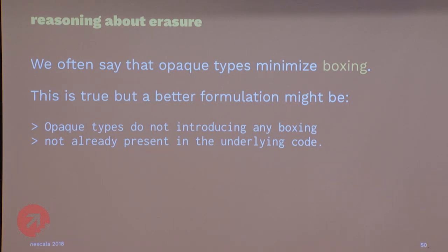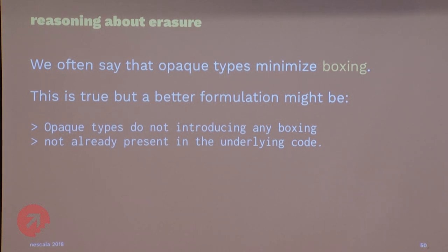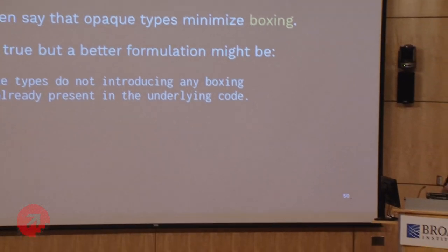One caveat: opaque types minimize boxing in the sense that they don't introduce any boxing that wasn't already present in your code. If your code was already going to box — like putting doubles into a list — opaque types don't magically fix that. But the point is they don't box in cases where the original type wouldn't have. They're not a panacea for all boxing; if you don't want your collection to box, you may still need specialization.